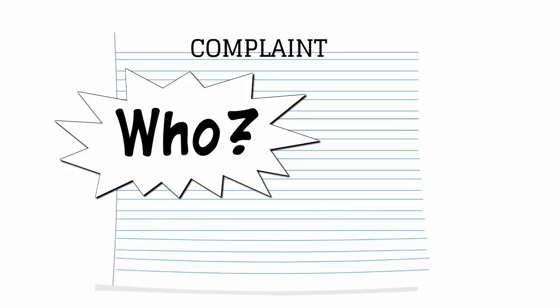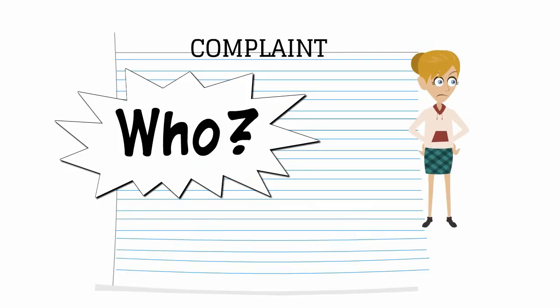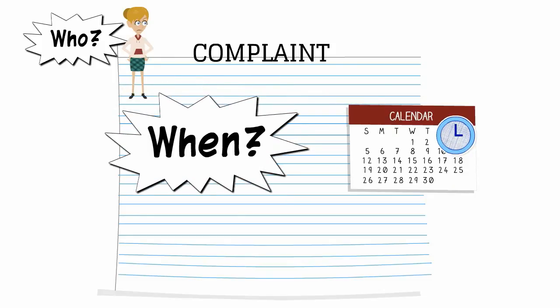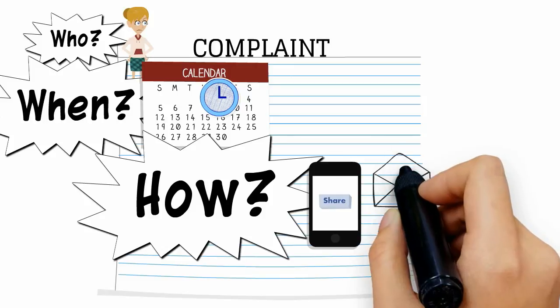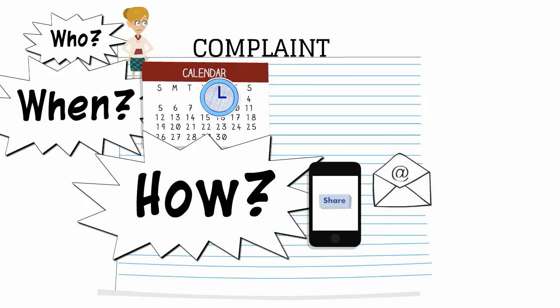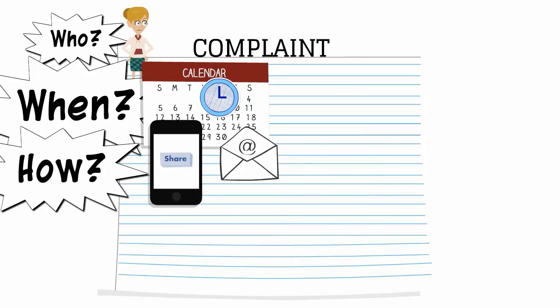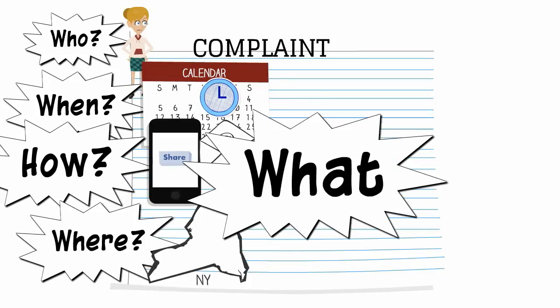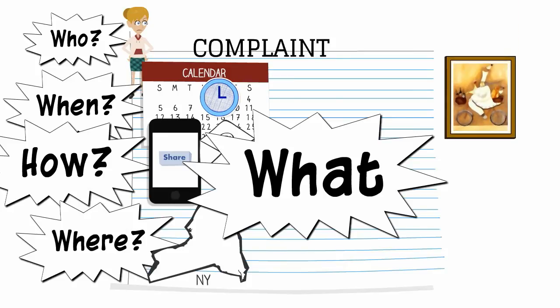Patty should allege who committed the fraud — that's easy, she thinks it was Debbie. She should also allege when the fraud occurred. Patty also needs to allege how the fraud occurred — for example, did Debbie lie to her over the phone, or did Debbie send an email, or was this a fraud in person? The complaint will also need allegations of where this fraud took place — for example, are we in an office in New York? And of course, Patty will need to allege what the fraud was. In this case, Debbie lied about a painting.